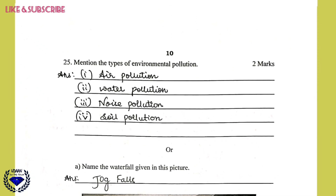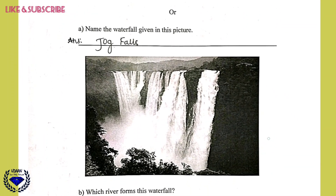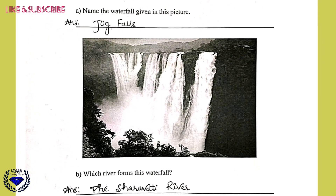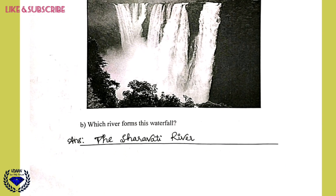Question 25: Mention the types of environmental pollution. The answer is: air pollution, water pollution, noise pollution, and soil pollution. The next question asks to name the waterfall shown in the picture — this is Jog Falls. The river that forms this waterfall is the Sharavati River. You should know that the water flowing through here is of the Sharavati River.